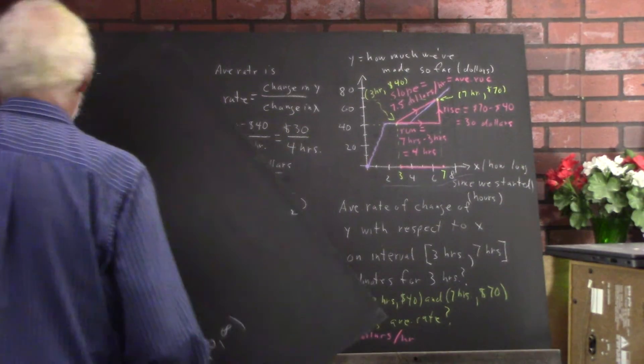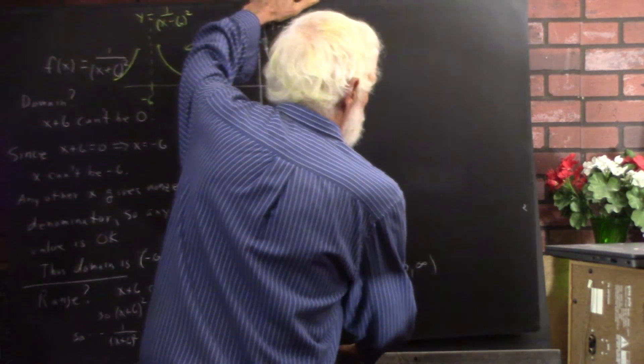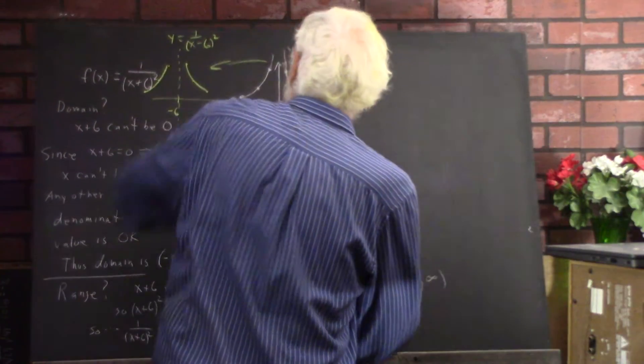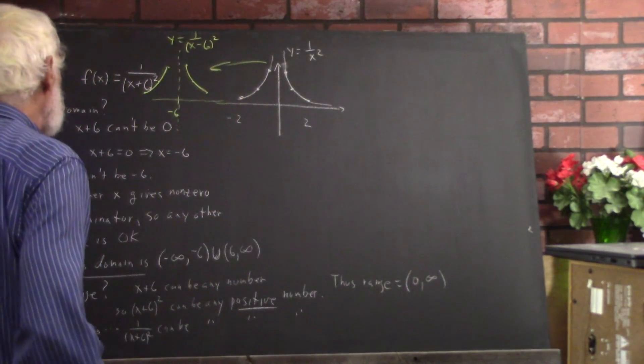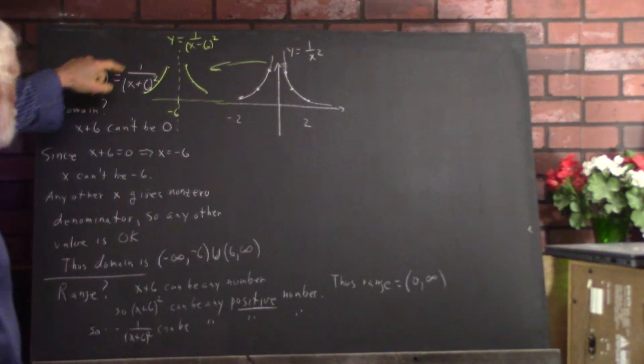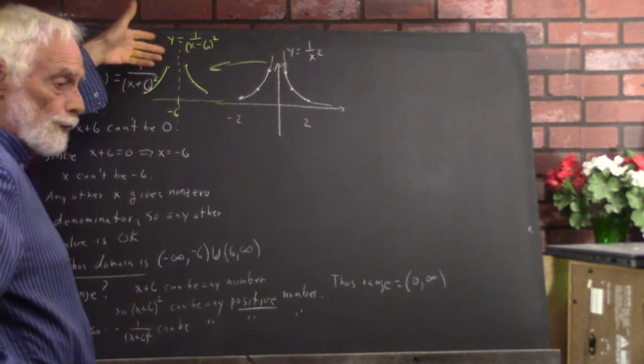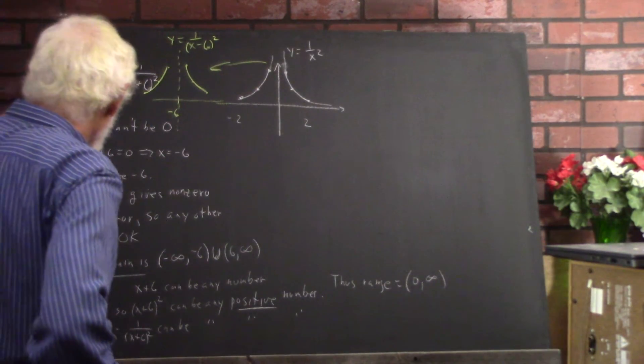There's another thing we want to look at. What about f of x equals 1 over x plus 6 quantity squared? What's the domain?